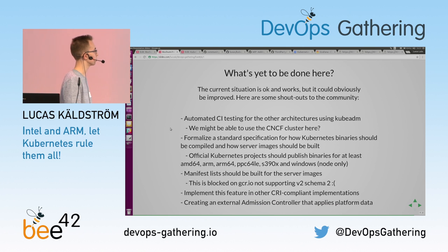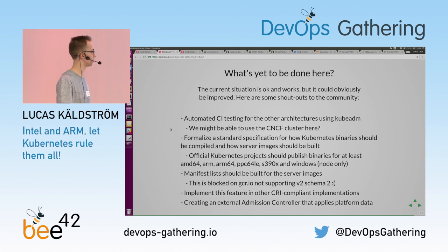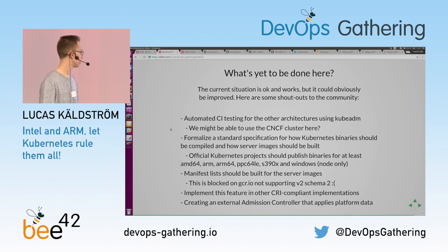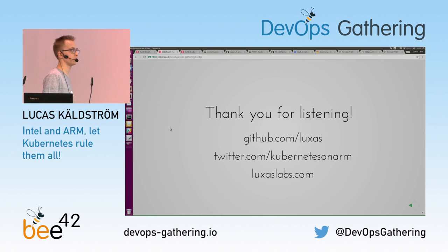That was just a side note. What's yet to be done for the multi-architecture stuff? Automated CI testing — right now we don't have a CI system that starts failing when someone breaks ARM compatibility, for example. I hope we'll have that in the future, but it requires some commercial support from a company interested in using Kubernetes on ARM. We also need to formalize a standard specification about how this should be built. What's a little disappointing is that GCR.io doesn't support Docker Registry API v2 schema 2 — that's something that has to be fixed. But that was my presentation. I hope you enjoyed it. Thank you.